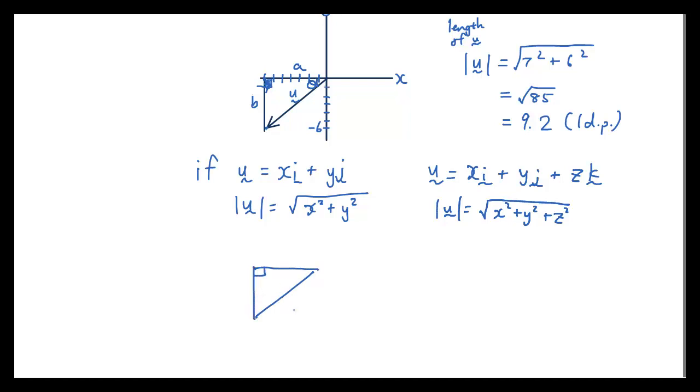So let me just isolate that triangle because it's getting a bit crowded. So we have u here, we have right angle here, and a is equal to 7, b is equal to 6, and I want this angle.